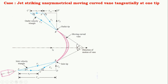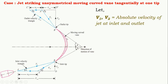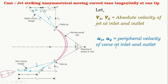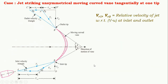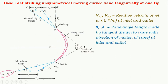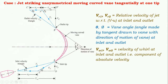Let us see the components of velocity. V1 and V2 are the absolute velocities of the jet at inlet and outlet. U1 and U2 are the peripheral velocities of the vane at inlet and outlet. Alpha and beta are the angles of absolute velocity of jet with direction of motion at inlet and outlet. Vr1 and Vr2 are the relative velocities of jet at inlet and outlet. Theta and phi are the vane angles, that is the angle made by tangent drawn to the vane with direction of motion of vane at inlet and outlet. Vw1 and Vw2 are the velocities of whirl at inlet and outlet, that is the component of absolute velocity. Vf1 and Vf2 are the velocities of flow at inlet and outlet.